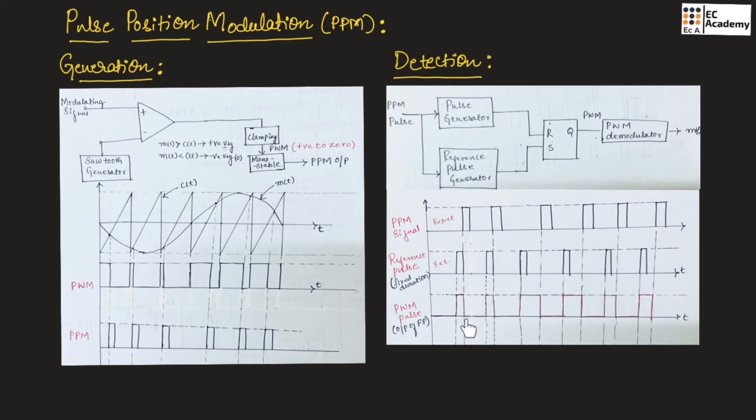This pulse width modulated signal will be demodulated to obtain the message signal. This is about pulse position modulation signal. Hope you have understood the topic. Thank you.